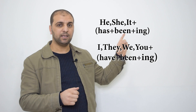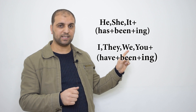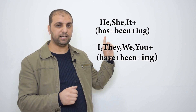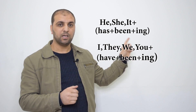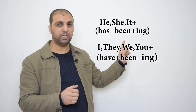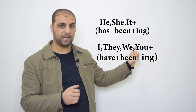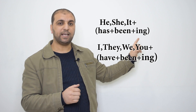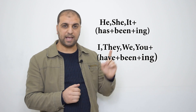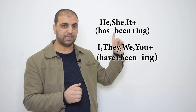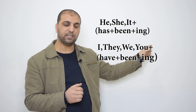فما هي قاعدة هذا الفعل؟ القاعدة بسيطة: has أو have حسب الفاعل. إذا كان الفاعل he أو she أو it تأخذ has. وإذا كان I أو they أو we أو you تأخذ have، زائد been زائد ing. Has or have + been + ing.